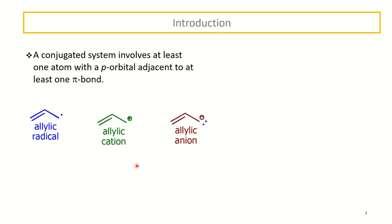Resonance tells you that you have at least three p-orbitals perpendicular to a plane of the molecule — a plane of carbon atoms. The simplest species with a conjugated system where we have resonance is the allylic system. The allylic system can be a radical, a cation, or an anion. We'll be looking at both the cationic and anionic species.